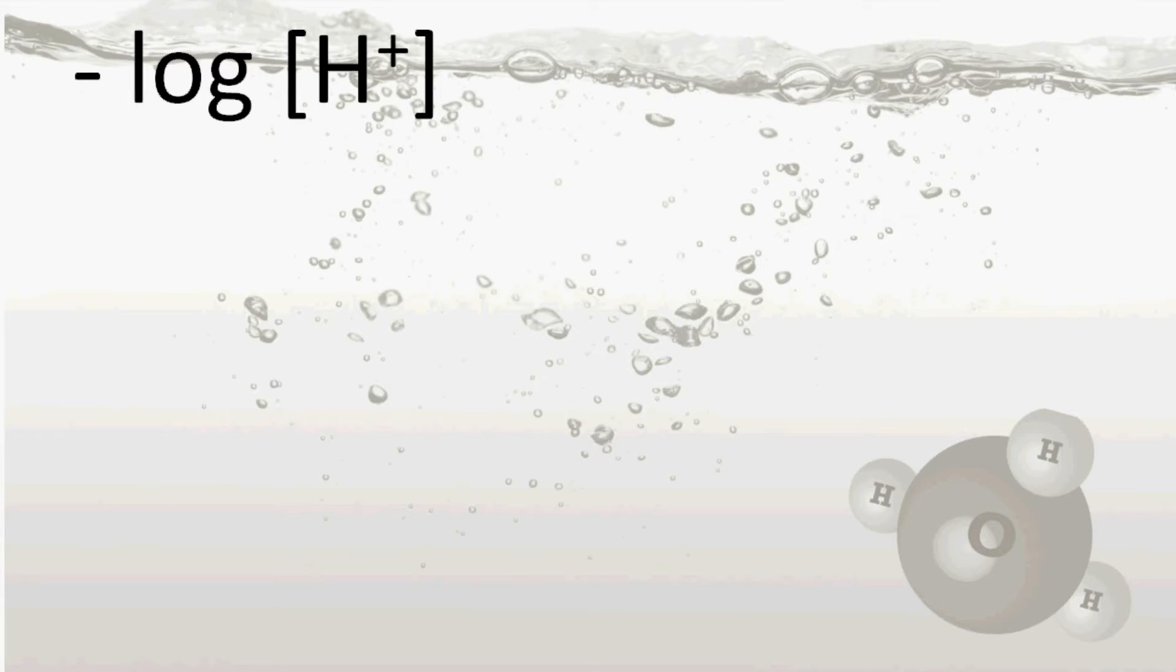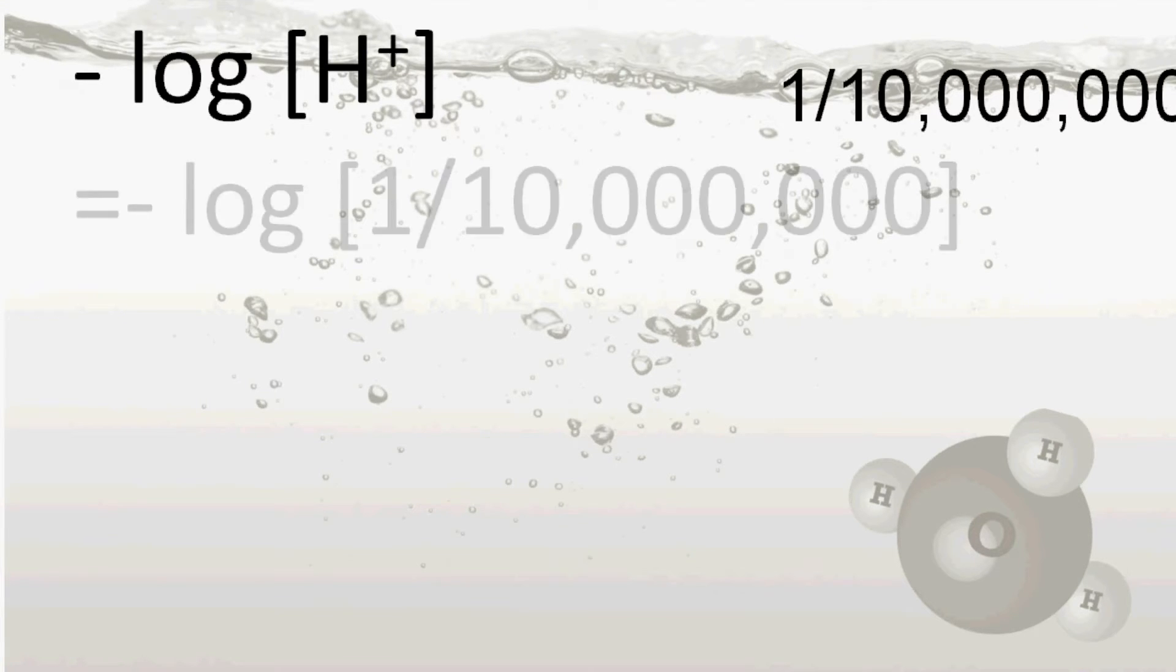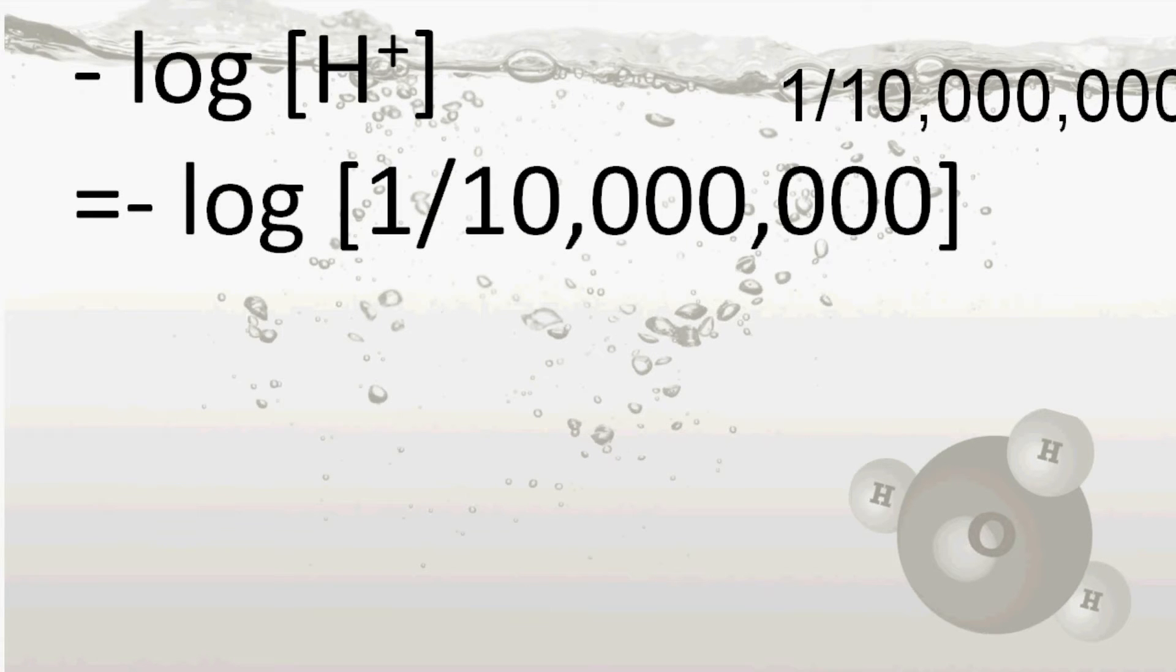In neutral water, chances of occurring a hydronium ion is 1 in 10 million. That means around 1 in 10 million molecules would probably be successful to form a hydronium ion. Let's find the pH: minus log 1 in 10 million.